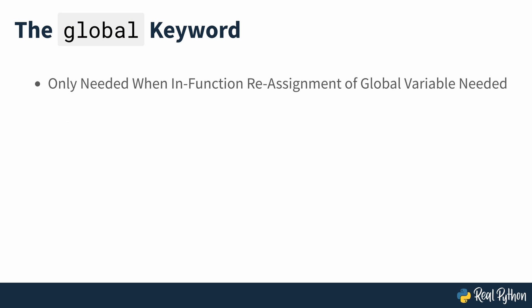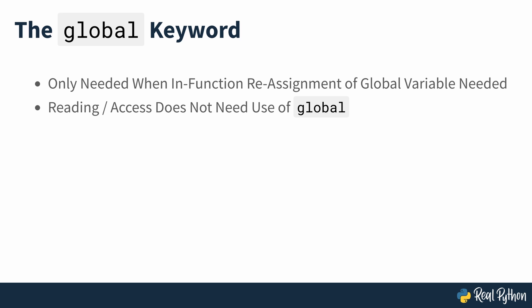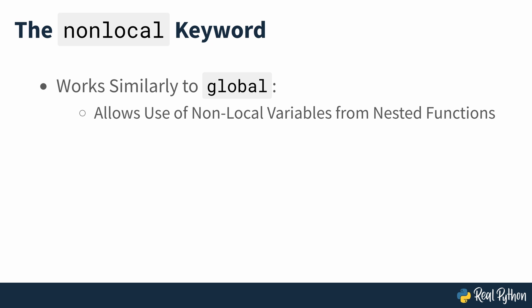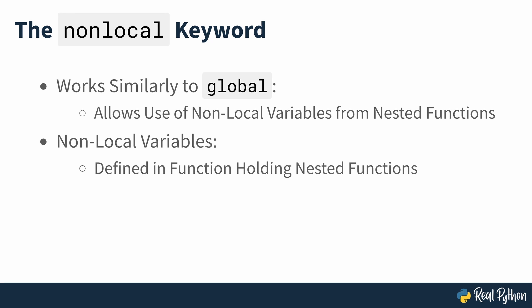In summary, you only need to use the global keyword if you want to reassign the global variable within a function. If you just need to read or access the value of the global variable, then you don't need the global keyword. Python also has a non-local keyword that works similarly to global. It allows you to use non-local variables from nested functions. Non-local variables are those that you define in a function that holds nested functions, and these variables will be non-local to the inner or nested functions.